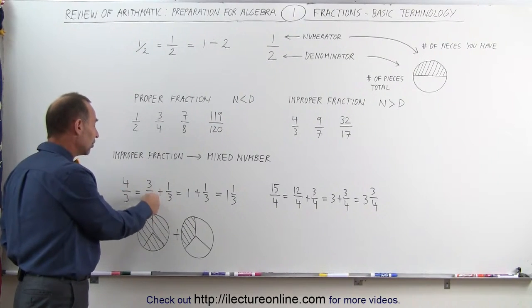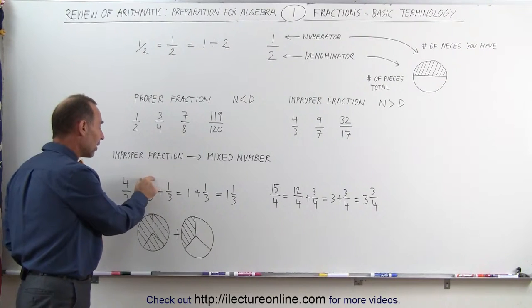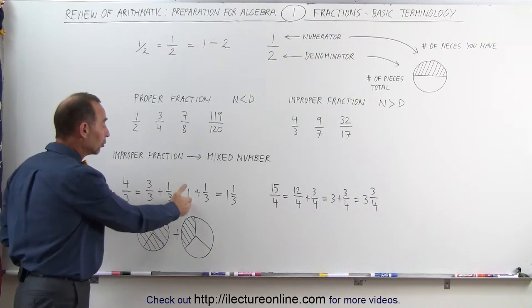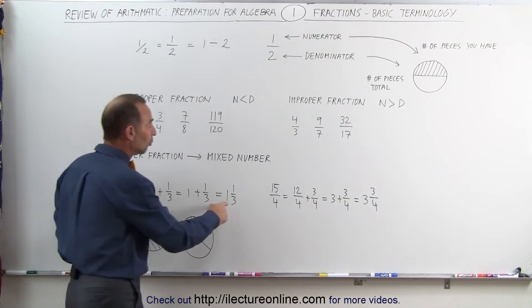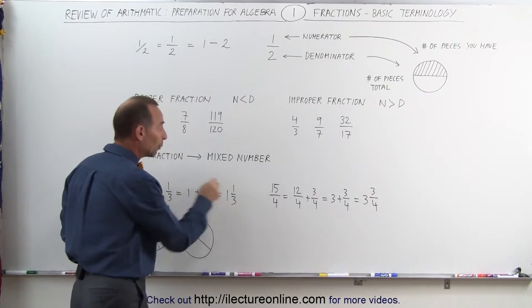But if we separate it like this, you can see that 3 thirds, if the number at the top and the bottom is the same, that is equal to 1. So this then becomes 1 plus 1 third, which is written as 1 and 1 third. We get rid of the plus.